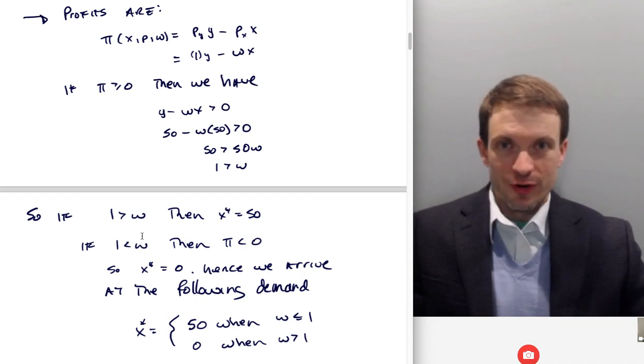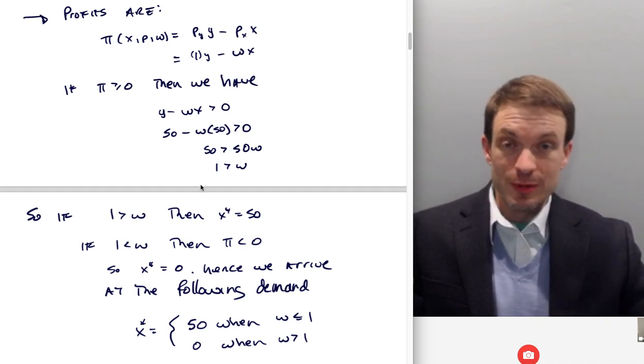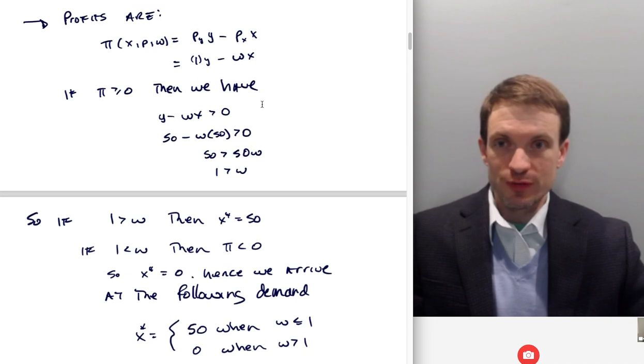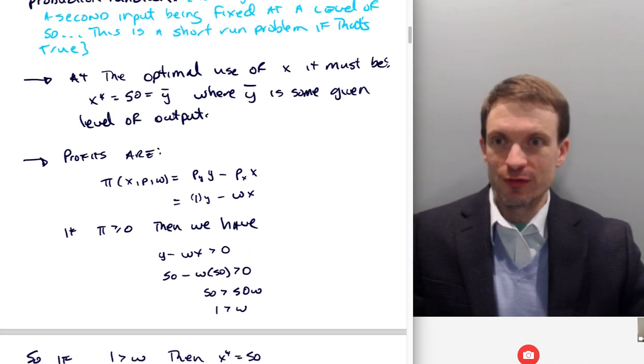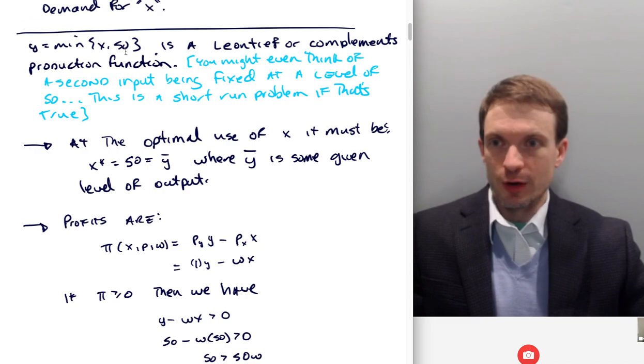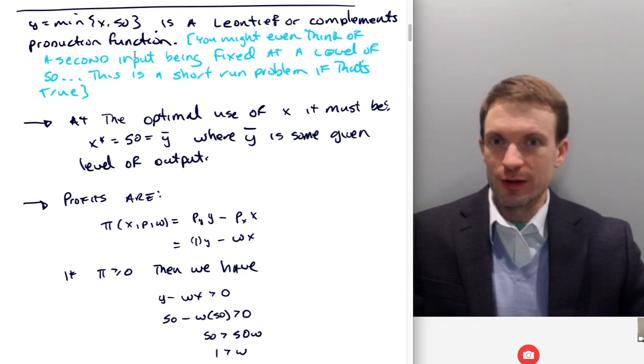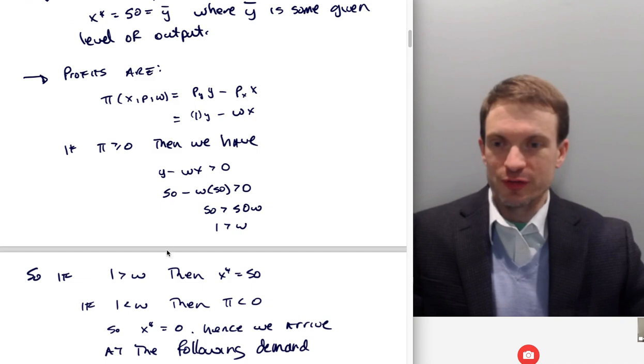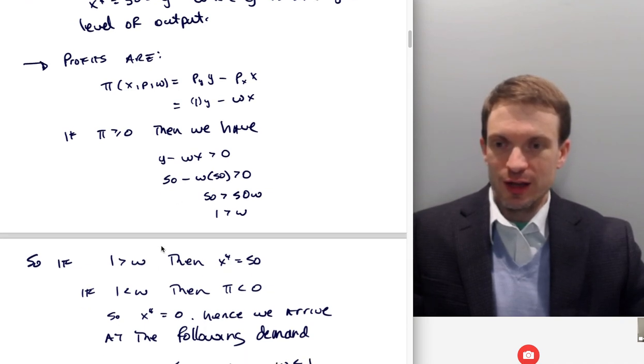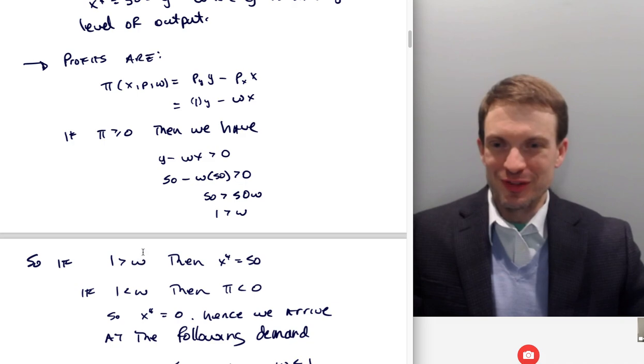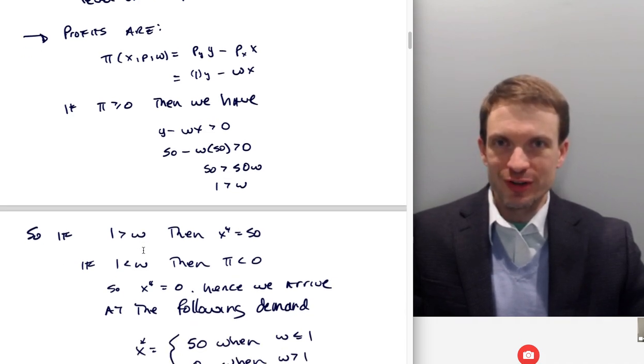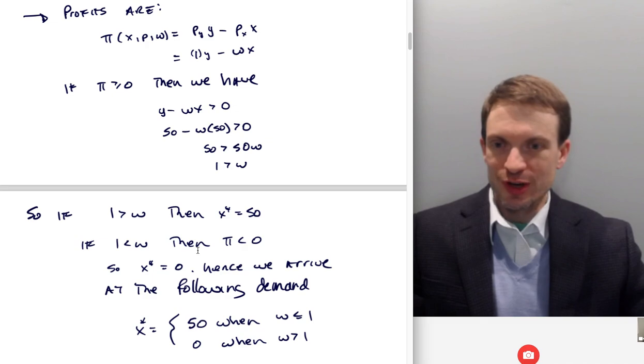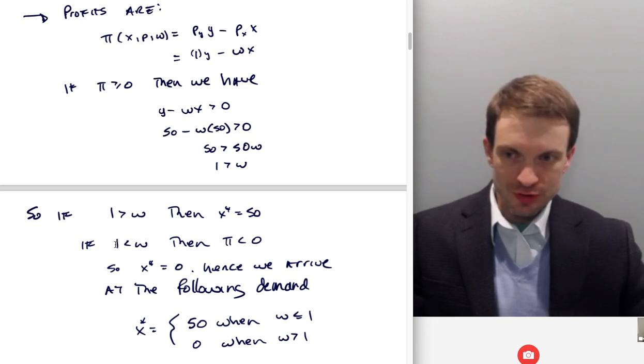Well, our competitive firm, if the input price is going to be bigger than the output price in this situation, remember the input price is like the variable portion of our cost function, right? The fixed portion of our cost function was this 50 here, right? And so the variable portion of our cost function is this omega. And if the price of the input is less than the price of the output, that's going to give us our short run shutdown condition. So yeah, we would shut down. Profits would be negative if the input price is bigger than the output price, which is this one. Therefore, the optimal use of the input, zero. You're going to shut down.